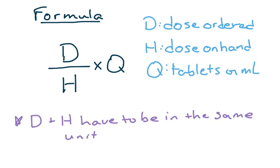The formula is D over H times Q. D is the dose that's ordered, H is the dose on hand, and Q represents the tablets or the milliliters. When we say tablets, it could also mean caplets, capsules, caplets.